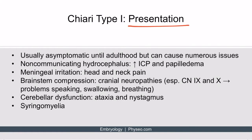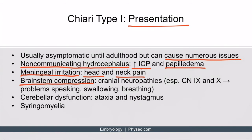Chiari type one malformations are usually asymptomatic until adulthood, but when they do become problematic they can cause numerous issues. The cerebellar tonsils can compress the natural flow of CSF and cause a non-communicating hydrocephalus, leading to increased intracranial pressure and even papilledema. Blockage of normal CSF flow can also irritate the meninges, causing head and neck pain. Additionally, the cerebellar tonsil can compress anteriorly and cause brainstem compression, leading to cranial neuropathies — most importantly cranial nerves 9 and 10, causing problems with speaking, swallowing, and breathing.